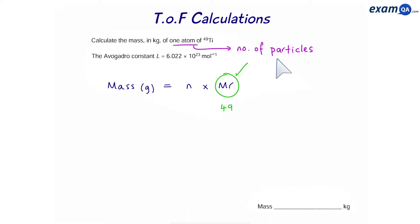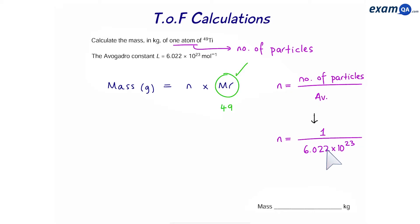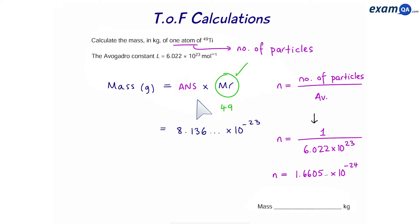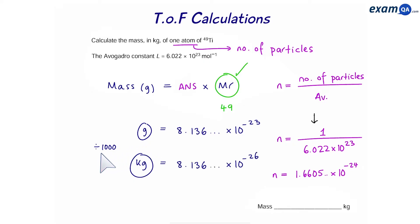We can use another equation to work out how many moles we have if we have number of particles. Number of moles is equal to number of particles divided by Avogadro's constant. So in this case, it's going to be 1 over Avogadro's constant. We can use this number of moles in the mass equation. We won't round the intermediate answer, and that will give us the value for mass. Now this mass is in grams, but the question wants it in kilograms, so we divide by a thousand.